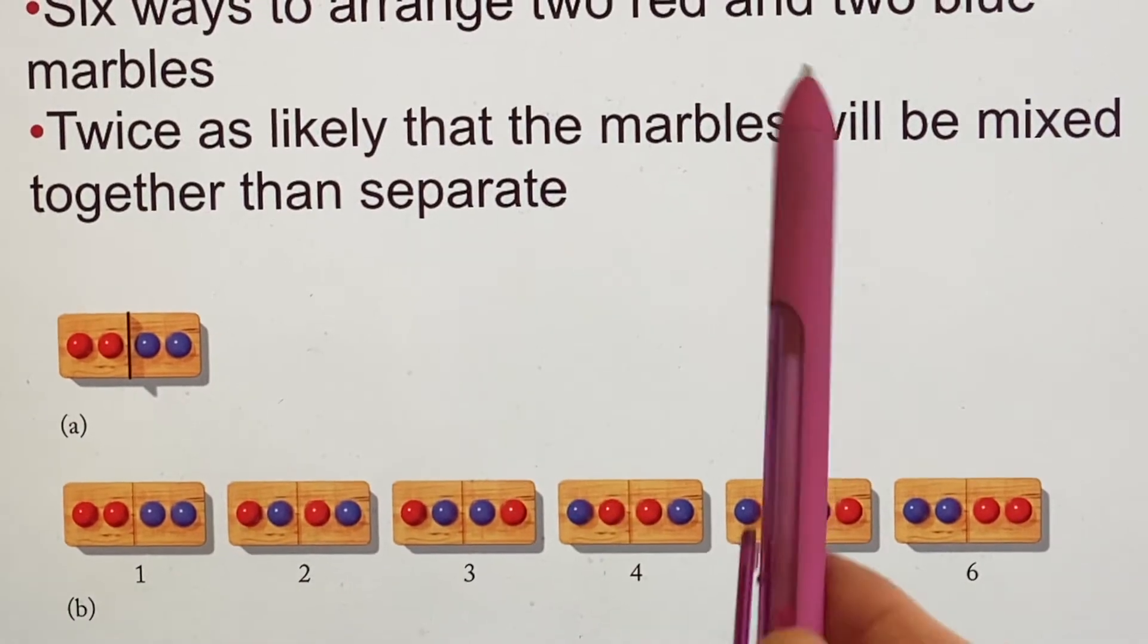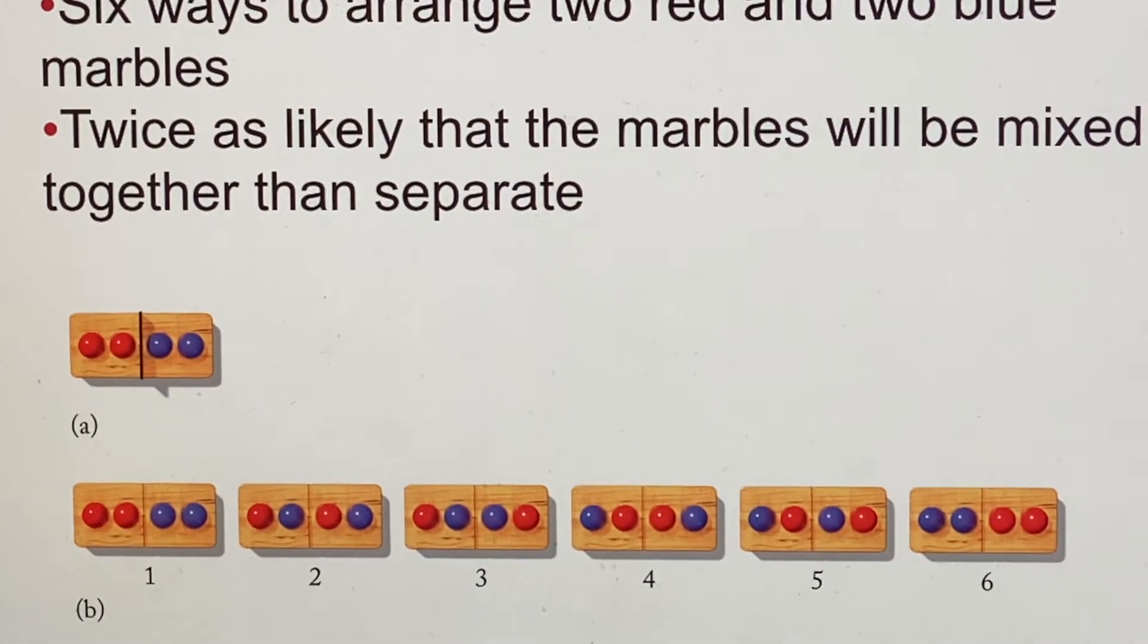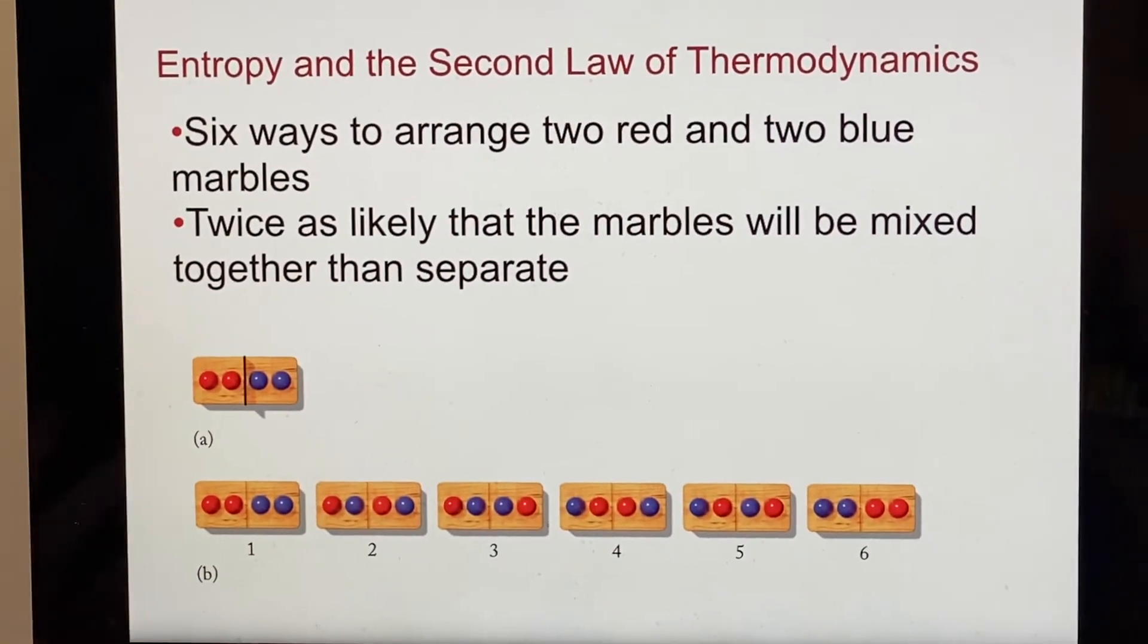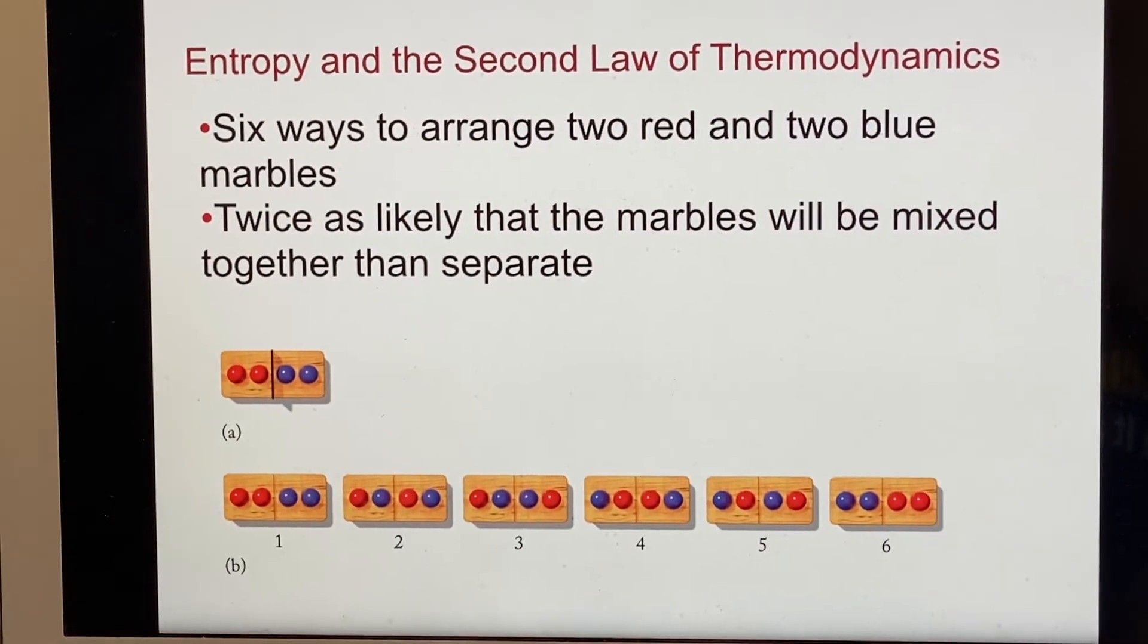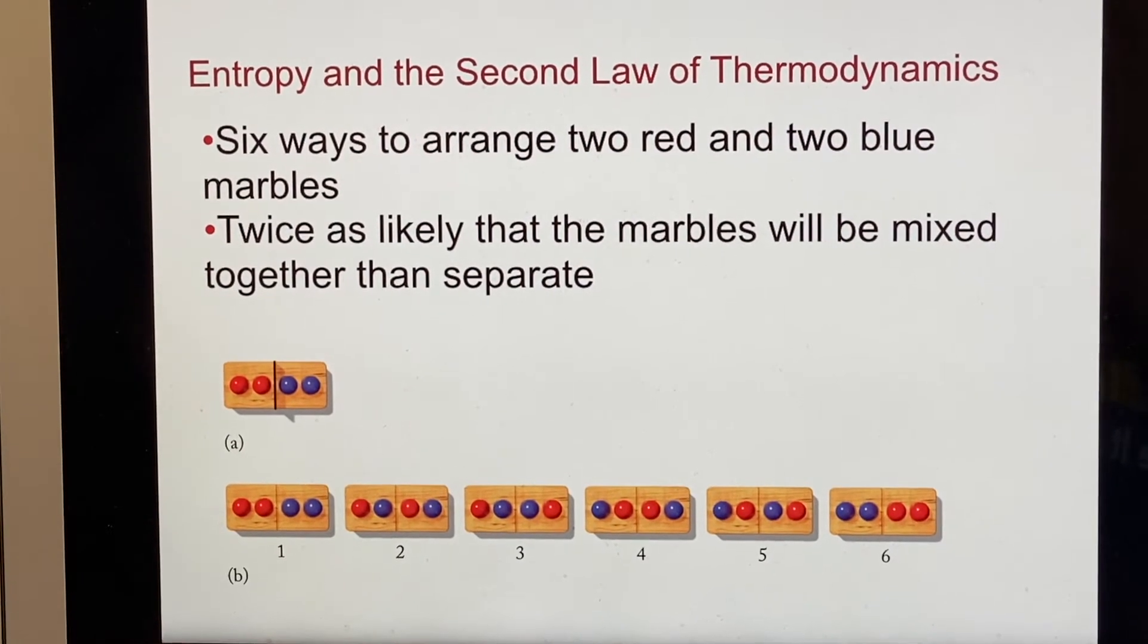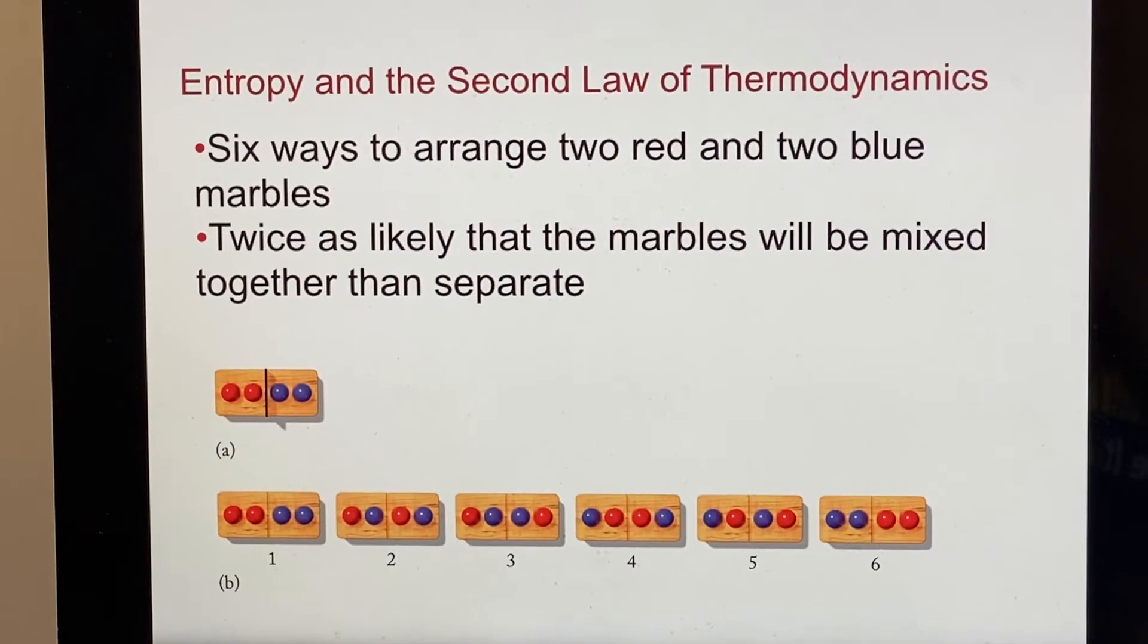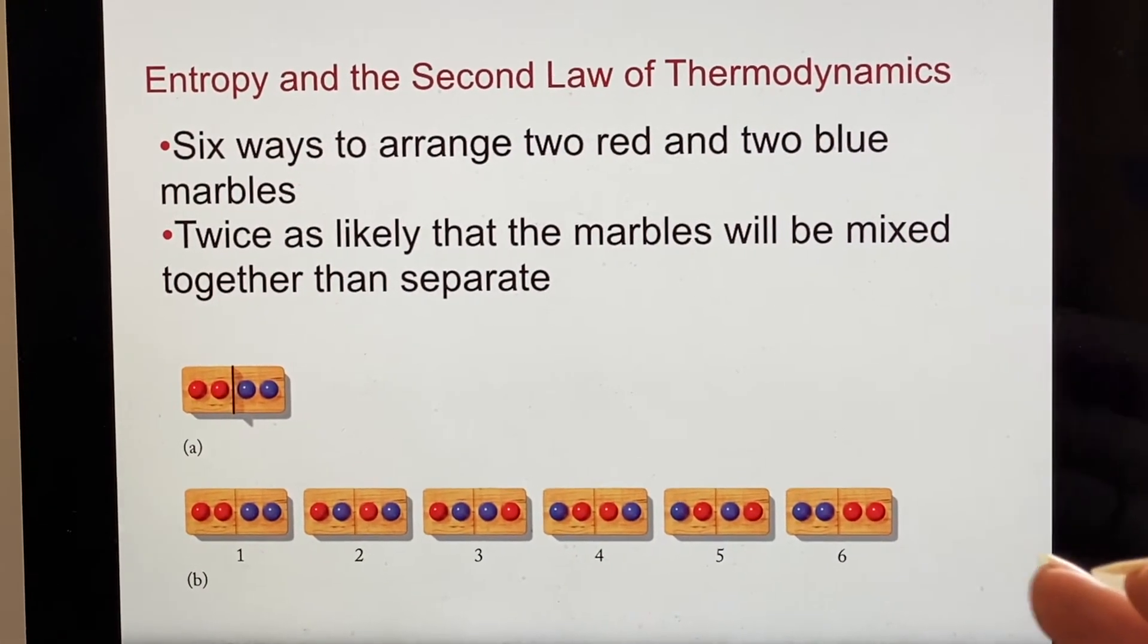Now, this is just talking about a grand total of four marbles. So it gets worse and worse as you add more marbles, more states that these things could be in. They're going to be mixed and not be separate. You're not going to see things spontaneously separate because there are just so many more ways that they could be mixed than they could be separate.